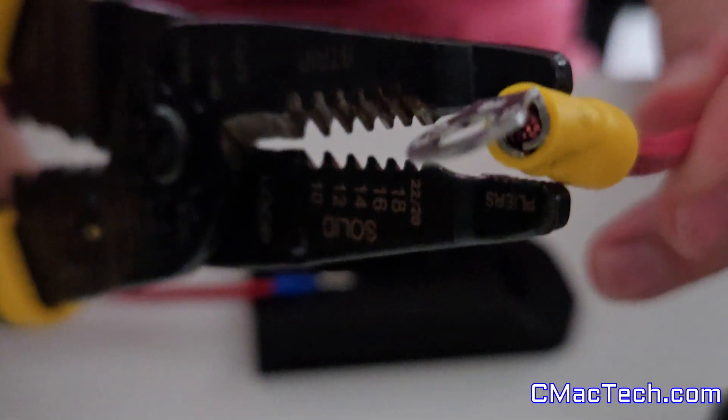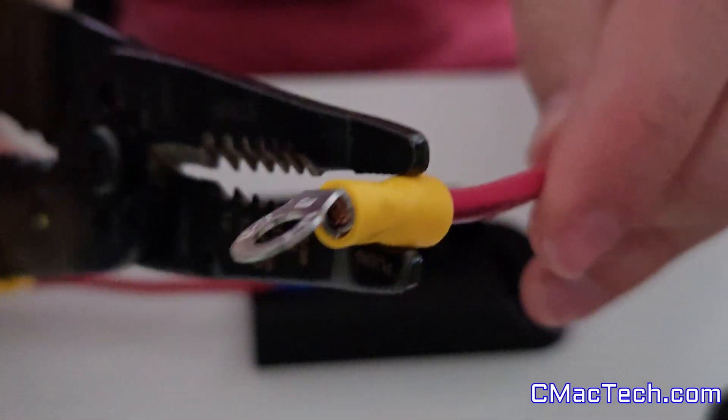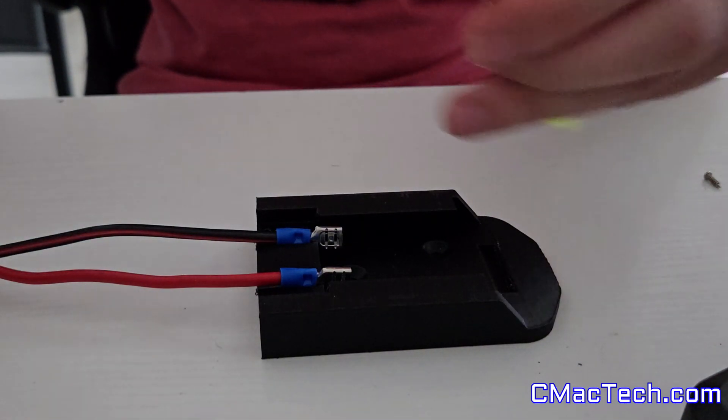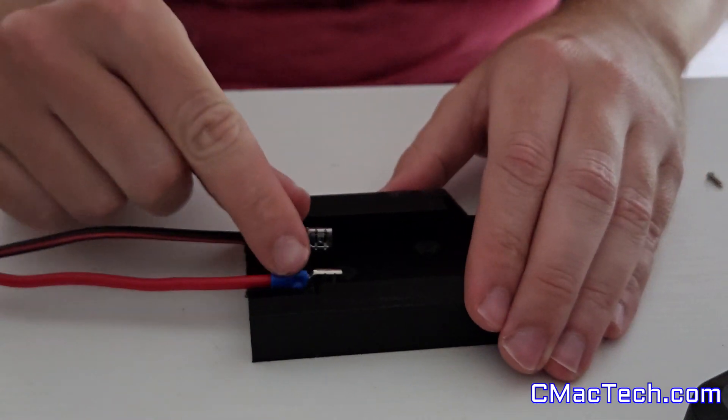So first thing I did is I used a spade connector and I used the pliers side of my wire strippers to kind of hug it, twist it a little bit, and take off that cover so everything fits.